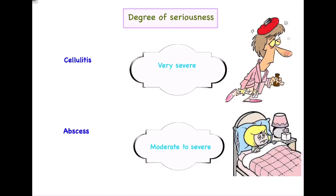The ninth differentiating point is the degree of seriousness. In cellulitis, the degree of seriousness is very severe, consistent with the severe loss of function and highly diffuse nature of the infection. It can lead to cavernous sinus thrombosis, a well-known complication of cellulitis. In abscess, the degree of seriousness is moderate to severe, and cavernous sinus thrombosis is rare.